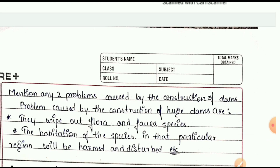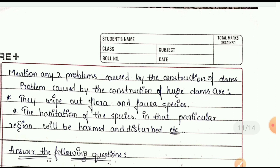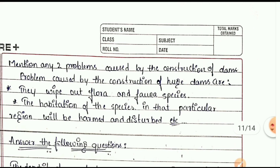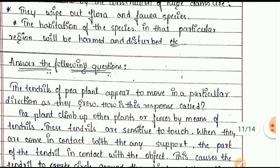Mention two problems caused by the construction of dams. Problems include: they wipe out flora and fauna species, and the habitation of species in that particular region is harmed and disturbed.